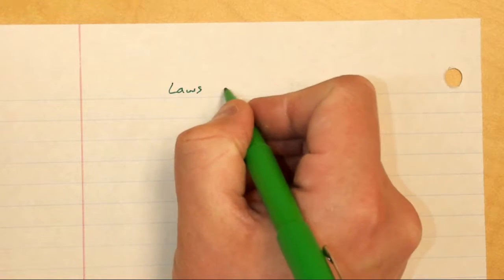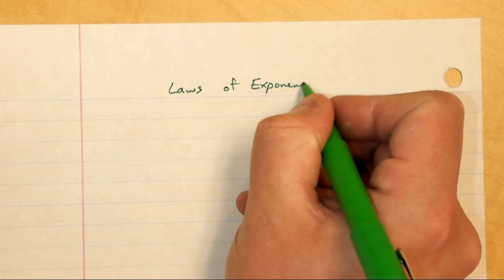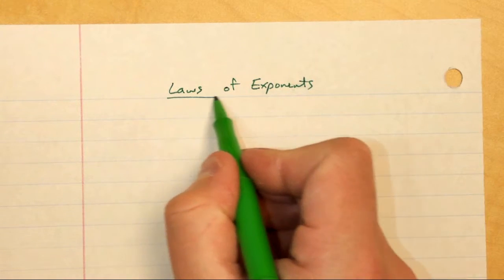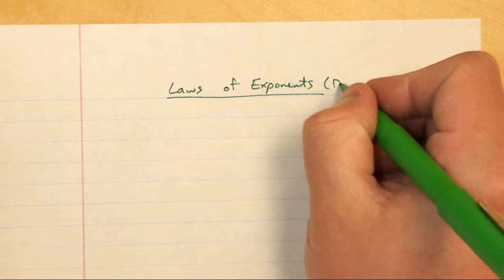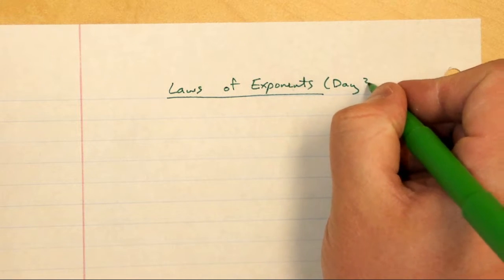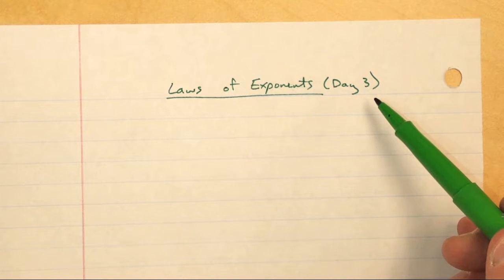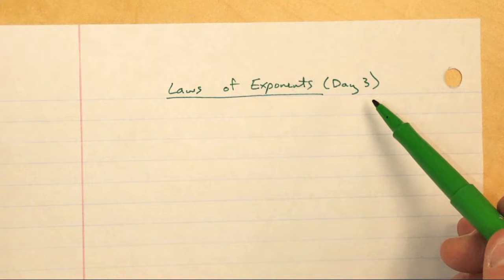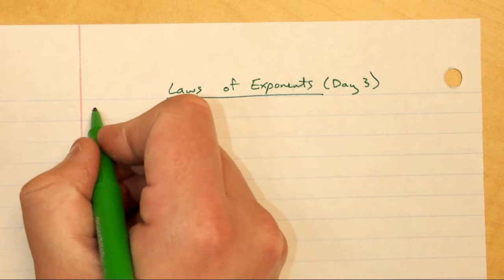Hello everybody, this is Mr. Douse. Today I'm going to continue doing notes on the laws of exponents. This is what I covered in class the last few days — this is going to be day three. Day one covered the power of one rule and the negative exponent rule. Day two covered the product and quotient rules. And then today is going to cover the power-to-power rule.